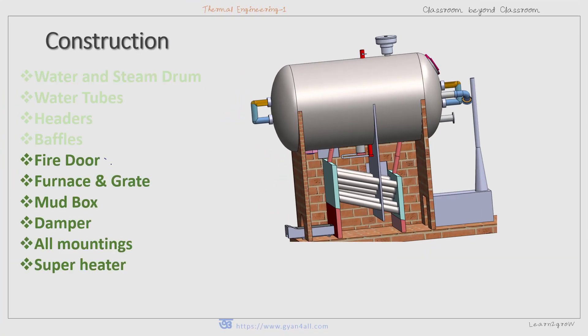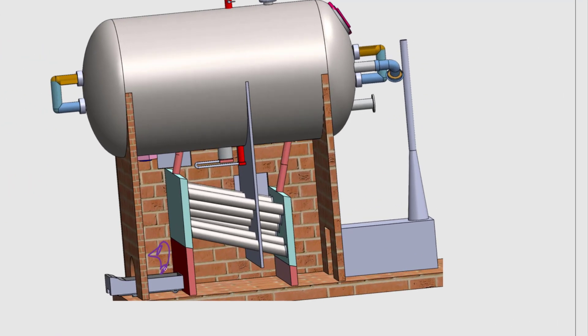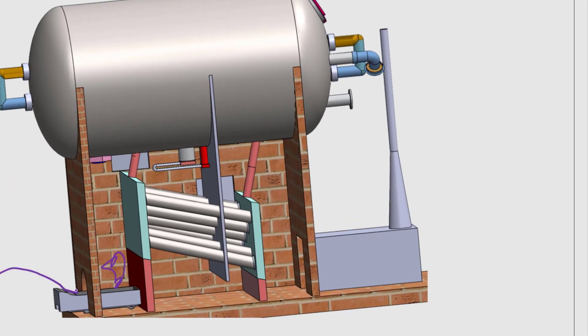The fire door is used for feeding fuel to the grate of the furnace to burn solid fuel. The solid fuel is fed through the fire door and is placed over the grate.